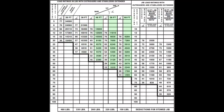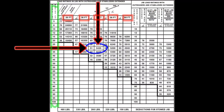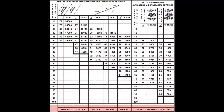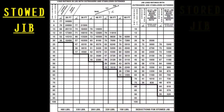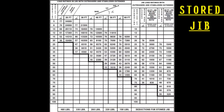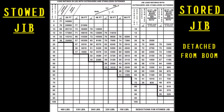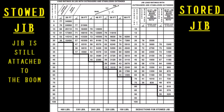By referencing this load chart, you'll notice that with the length of your boom and the operating radius, you will be able to identify the load ratings as well as the angle for the boom. Pay close attention to the deductions for the stowed jib, represented at the bottom of the load chart. Be sure to know that there is a difference between stowed and stored. Stored means the jib is on the ground, detached from the boom. Stowed means the jib is actually attached to the boom.